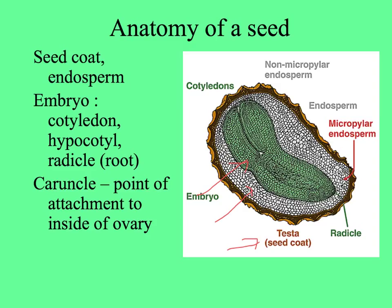shown in green here, is this little seedling. The embryo itself has the radicle — the primary root — the thing that pokes out of the seed first when it germinates. The hypocotyl is the area below the cotyledons, and then the cotyledons here.